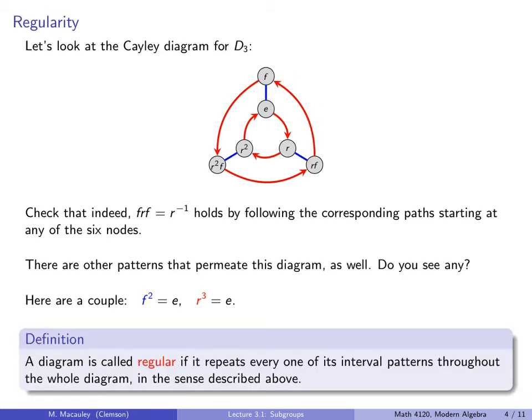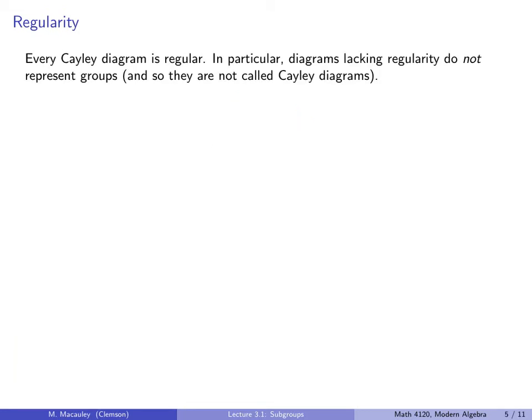Here's a definition. It's a little bit informal, but I think it gets the point across clearly and unambiguously. A diagram is called regular if it repeats every one of its internal patterns throughout the whole diagram in the sense described above. Naturally, every Cayley diagram is regular, and in particular, diagrams lacking regularity do not represent groups, and so they are not called Cayley diagrams.